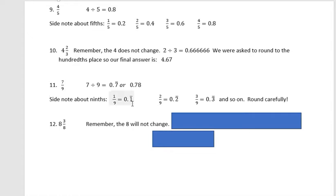One ninth is 0.1 repeating. Two ninths is 0.2 repeating. Three ninths is 0.3 repeating and so on. But we always have to round carefully. We can't just say it's 0.33 and 0.55, 0.77. We have to think about it. This would be 0.33, but obviously the 0.777 would be 0.78. So round carefully.